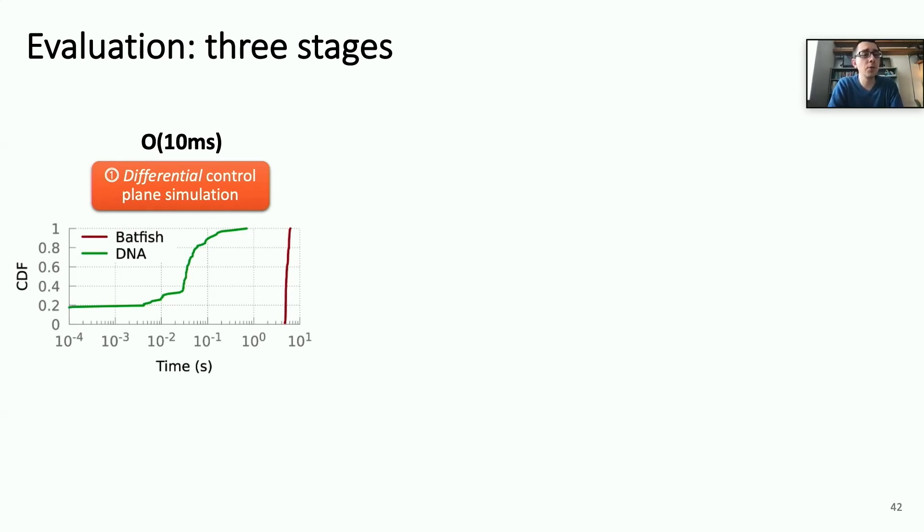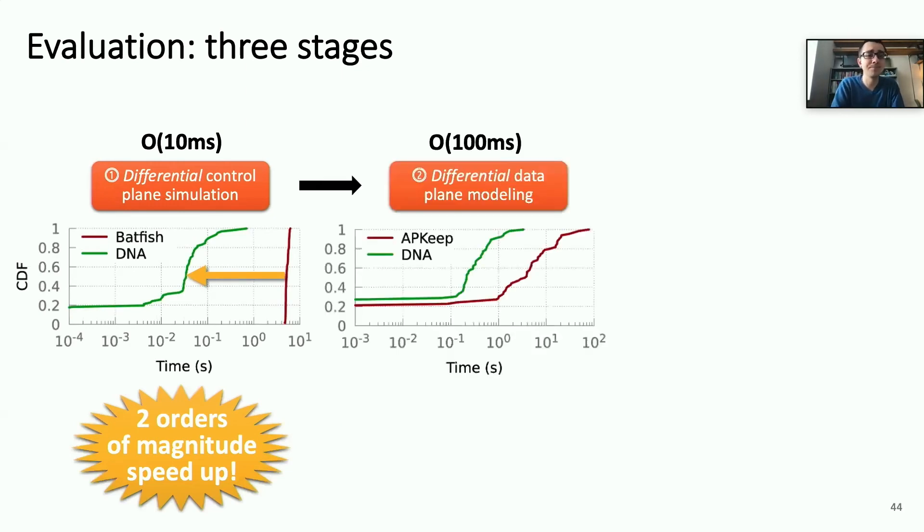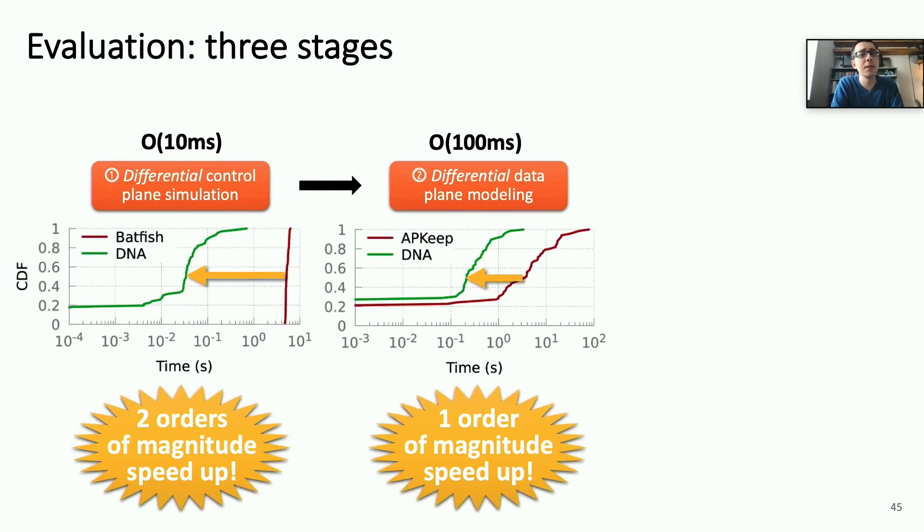So, in our differential control plane simulation stage, again, we compare DNA's incremental control plane simulation using ddlog against batfish. This takes on order of about 10 milliseconds with DNA, which is about two orders of magnitude faster than batfish. In the second stage, our differential data plane modeling, we compare against an unmodified version of APKEEP that doesn't include the rule batching optimization we introduce in DNA. And this allows us to get about an order of magnitude speed up such that differential data plane modeling takes on the order of hundreds of milliseconds for the university backbone network.